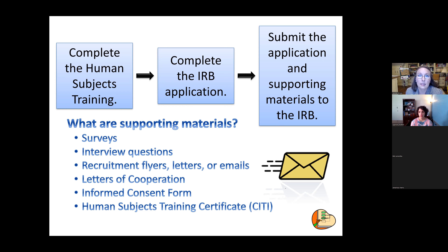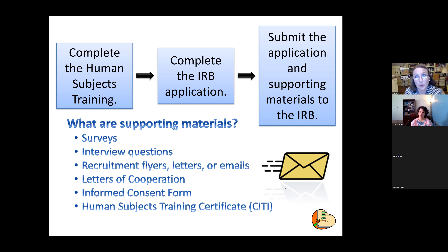If you are working with a school system or other entity, we need a letter of cooperation — sometimes an email confirming permission or support will suffice. Letters of cooperation are not required for the initial review; you can receive conditional approval if you don't yet have one. Some school systems want to see institutional IRB approval before granting their own. Just mark it as pending, and your approval will be conditional upon obtaining permission from that outside agency. You also need an informed consent unless you are waiving it.